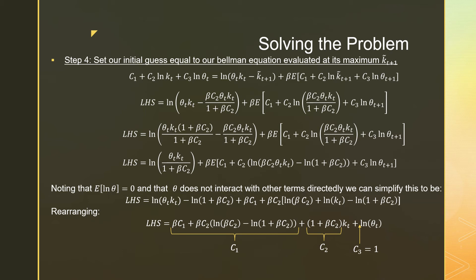and that theta does not interact with other terms directly. So we can simplify this down to being the following, which is beta C1 plus beta C2 times ln beta C2 minus ln 1 plus beta C2. I'm reading that from the bottom. That is our term for C1. And C2 is going to be 1 plus beta C2, and that's going to be on our KT.